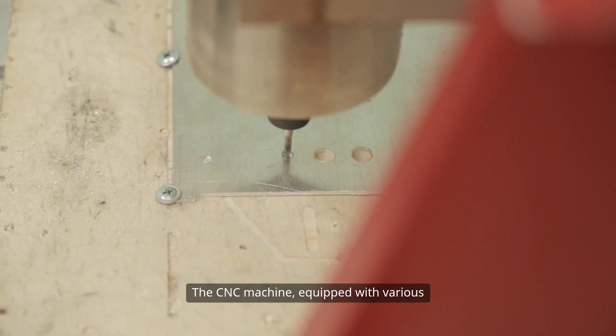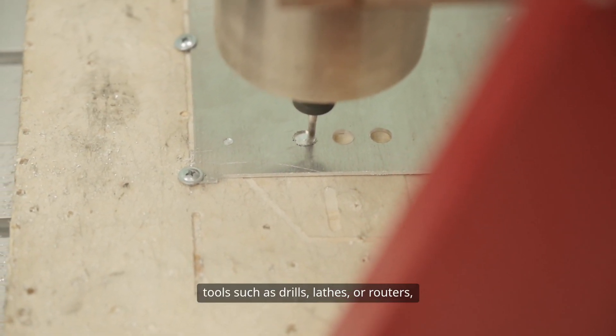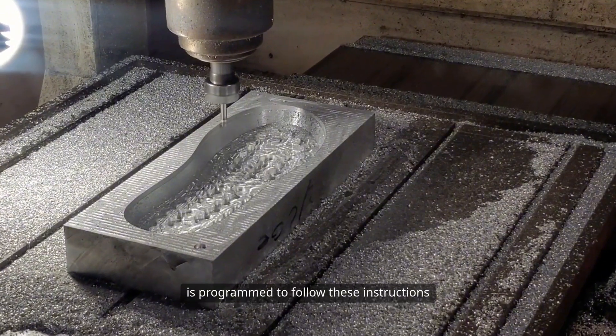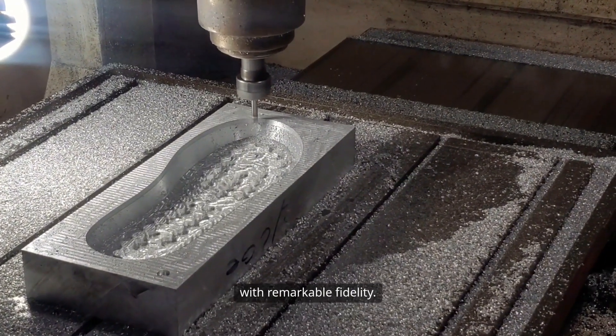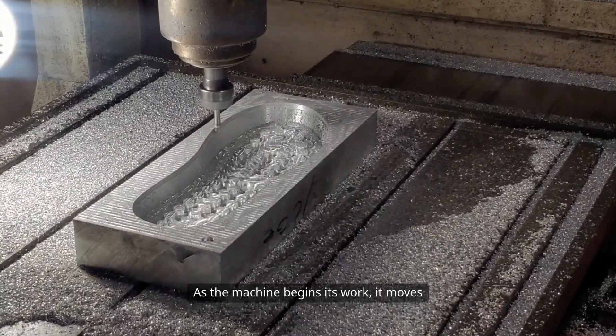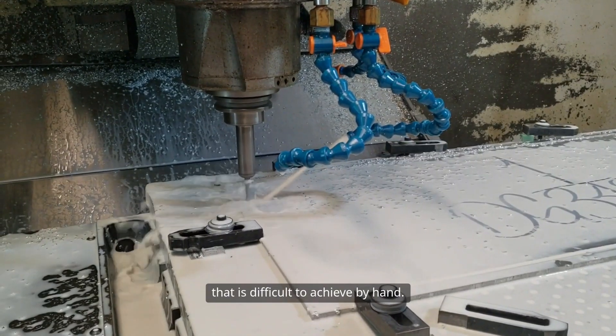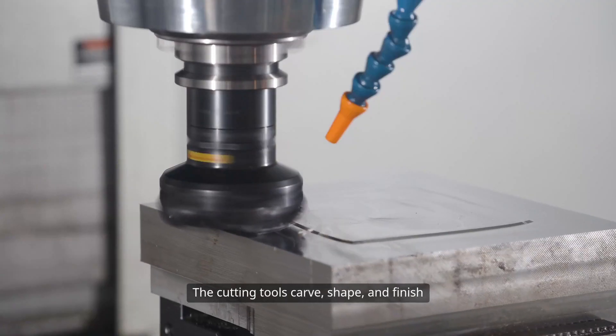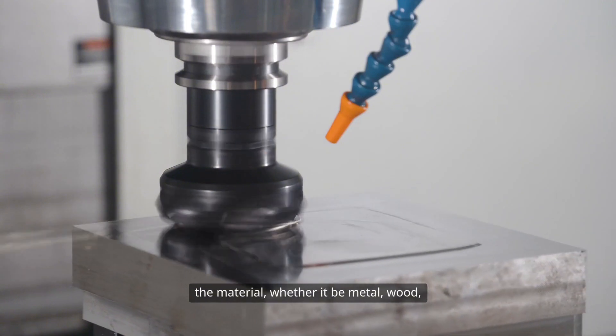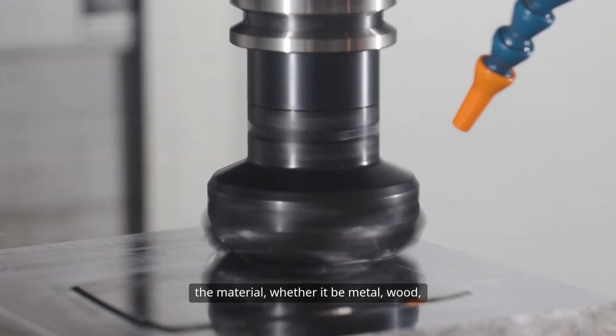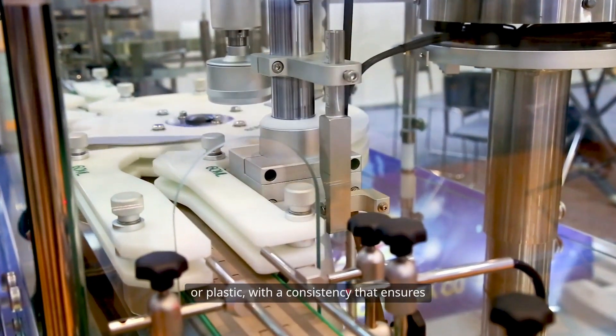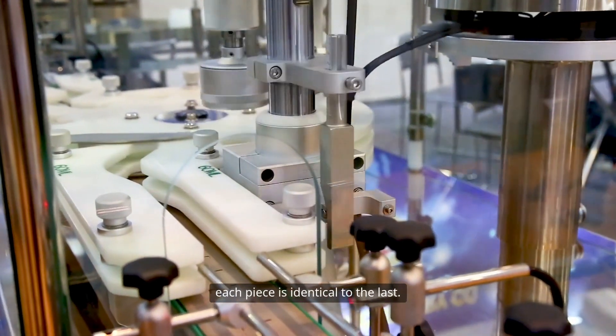The CNC machine, equipped with various tools such as drills, lathes, or routers, is programmed to follow these instructions with remarkable fidelity. As the machine begins its work, it moves through the material with a level of precision that is difficult to achieve by hand. The cutting tools carve, shape, and finish the material, whether it be metal, wood, or plastic, with a consistency that ensures each piece is identical to the last.